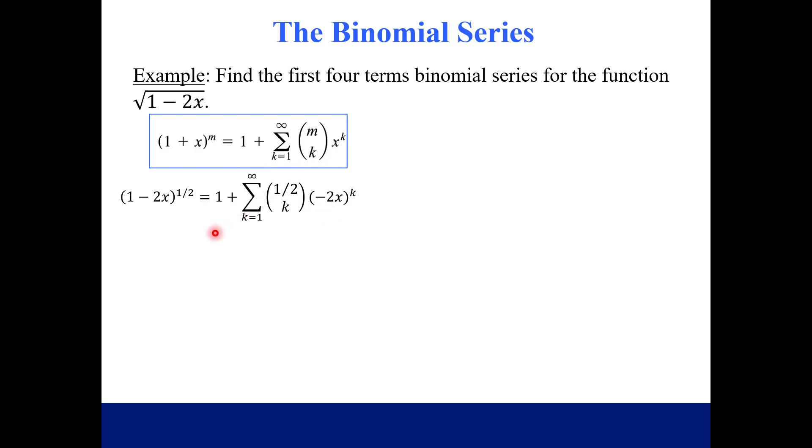Let's start expanding this and we're only going to find the first four terms. This coefficient is, M was one half, so one half choose one, one half choose two, and one half choose three. Notice that is four terms because the first term was actually just one, which is part of the original formula. The power comes from K, so K is one, the power is one, K is two, the power is two, and so on.